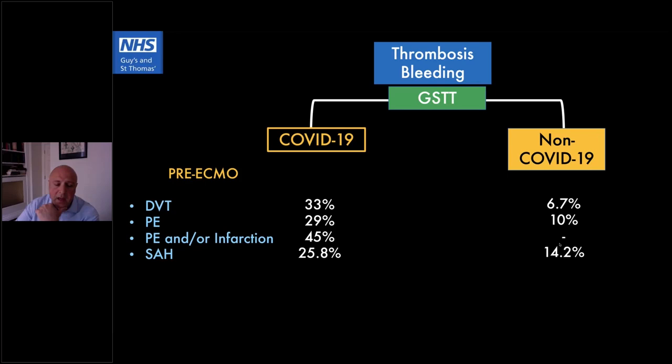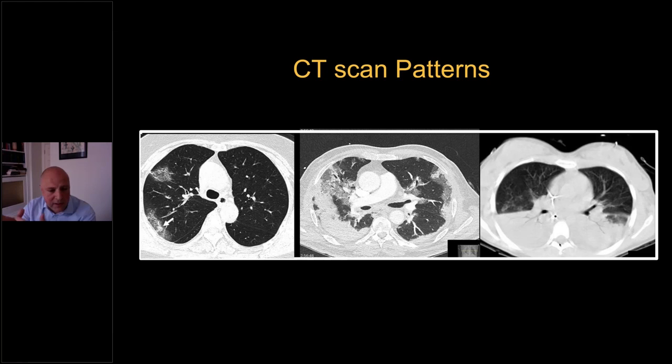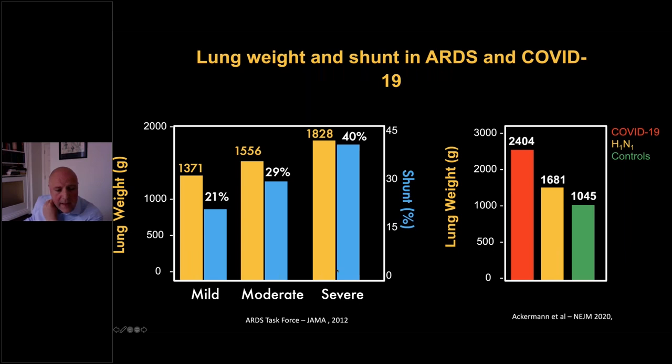The presentation is very different, ranging from just ground glass peripherally with lung volume pretty much preserved, all the way to loss of volume and large edema. Data from the ARDS task force that created the Berlin definition show that as the oxygenation defect worsens from mild to moderate to severe, lung weight increases, meaning lung edema increases and shunt fraction increases. Post-mortem data from the New England Journal show that in COVID-19 the lung volume and lung weight is much less than in H1N1. So clearly there is a difference between edema and oxygenation.